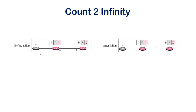Here we are given a scenario with a collection of routers, which we can also refer to as nodes. For node A and B, we are given a part of a routing table called a route. This route has a destination, a distance, and a next hop. The distance between node A and node X is 1 (one hop), and the distance between node B and node X is 2 (two hops), with the next hop for B set as A.